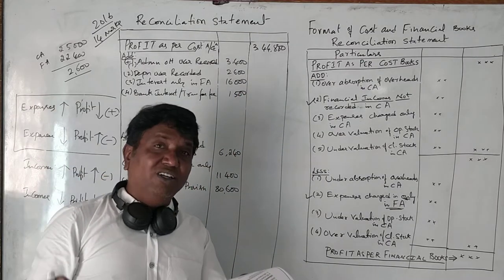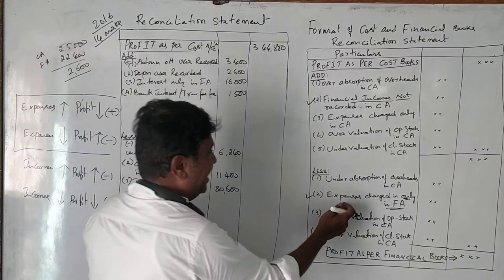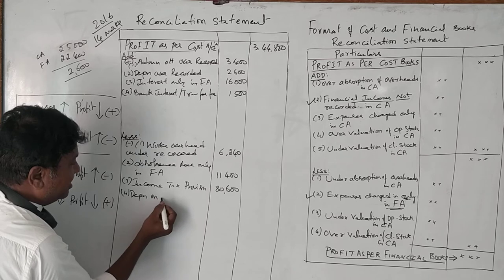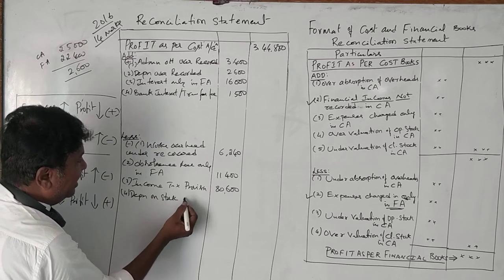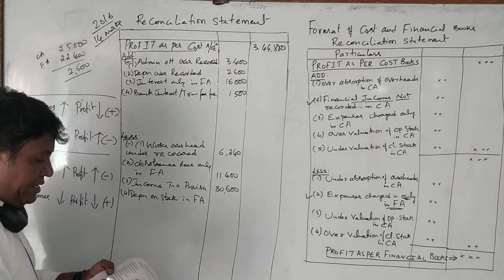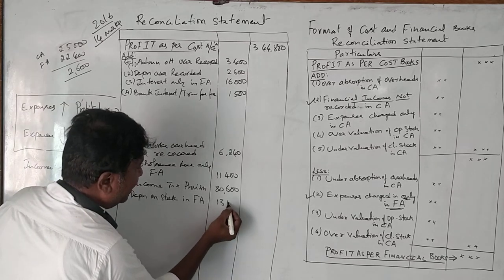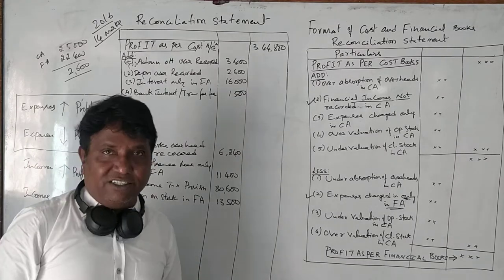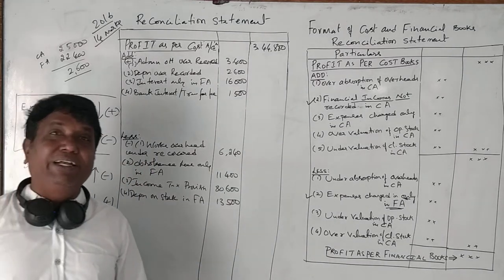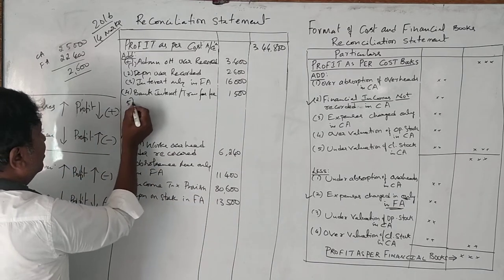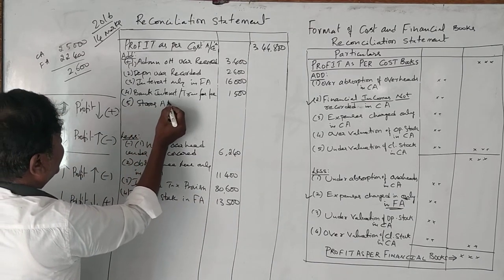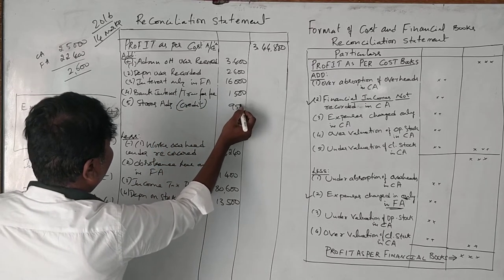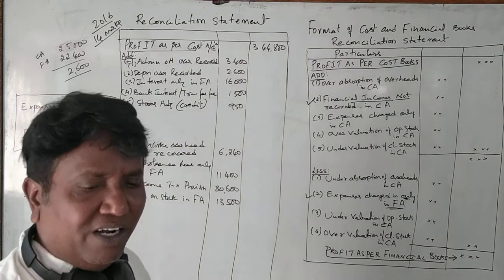Depreciation on stock is charged only in financial accounts — expenses charged only in FA. Depreciation on stock in FA is 13,500 rupees. Next, stores adjustment credit is income, so stores adjustment credit of 950 rupees should be added.